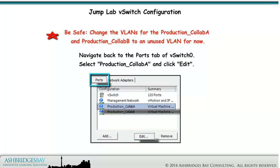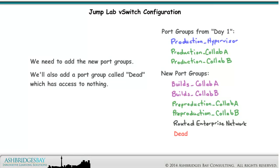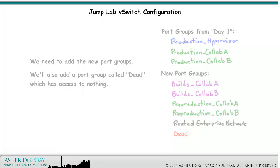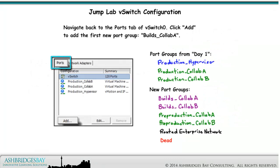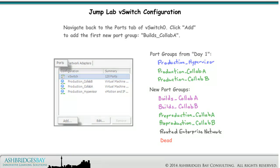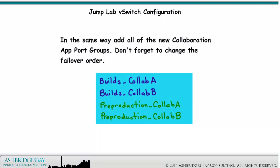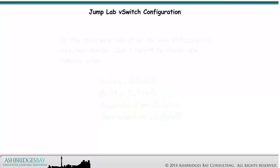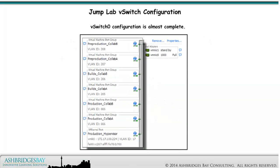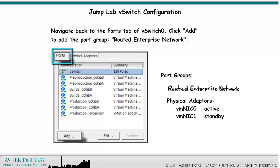Navigate back to the Ports tab of vSwitch 0. Select Production Collab A and click Edit. We need to add the new port groups. We'll also add a port group called Dead, which has access to nothing. Navigate back to the Ports tab of vSwitch 0 properties. Click Add to add the Builds Collab A port group. In the same way, add all of the new port groups — don't forget to change the failover order. vSwitch 0 configuration is almost complete. Navigate back to the Ports tab of vSwitch 0 properties and click Add to add the port group Routed Enterprise Network.